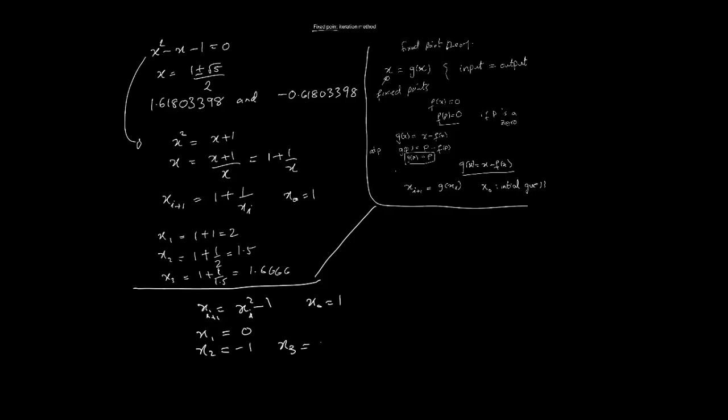x_3 equals 0, and it will keep fluctuating between minus 1 and 0, and it will never converge. This particular iteration will not converge no matter what seed you start with. In this case, it doesn't work out.